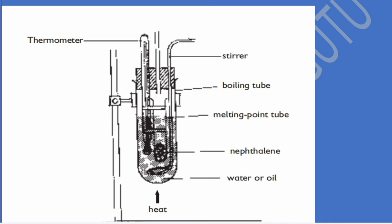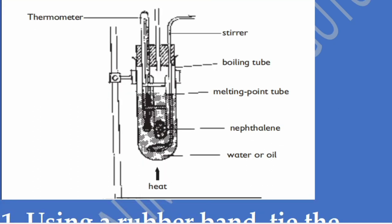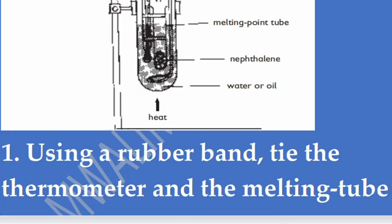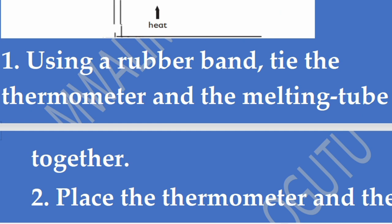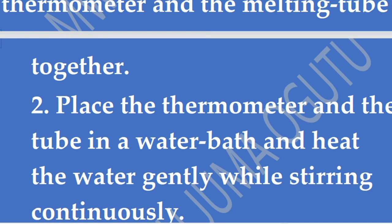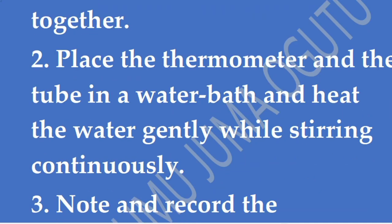The apparatus is set up as follows: you have a thermometer, a stirrer, a boiling tube, a melting tube, naphthalene, and water or oil acting as a water bath. We are not providing heat directly to the naphthalene — heat is provided through a water bath. The procedure: using a rubber band, we tie the thermometer and the melting tube together. We place them in a water bath and heat the water gently while stirring continuously.